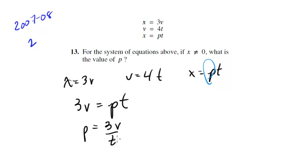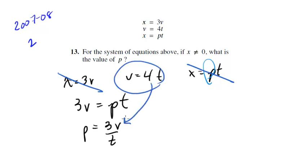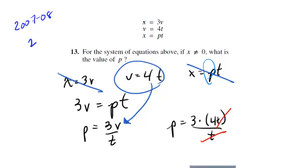Now let's do a substitution. We know that v is equal to 4t — remember, you're going to use almost all your information in a problem most of the time. So let's substitute 4t in for v. Then p is equal to 3 times 4t over t, and look at that — the t's cancel, which is good, otherwise we definitely couldn't do this problem. We get 3 times 4 is 12. The answer to this one is indeed 12. Notice it may look impossible, but they've had to set it up in order for you to be able to do it.